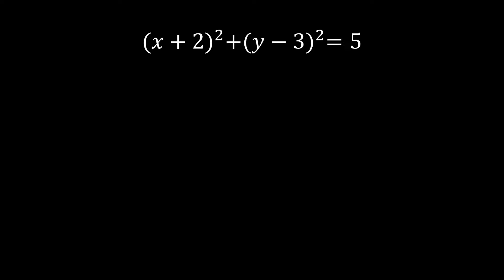Let's go to the next example. You may pause the video and resume once you're done expanding and writing it in general form. We expand by special product: square the first term gives x squared; x times 2 is 2x, times 2 gives 4x; then square the last term: 2 squared is 4. Then expand the second group: y squared; y times negative 3 is negative 3y, times 2 gives negative 6y; then square the last term: negative 3 squared is positive 9.